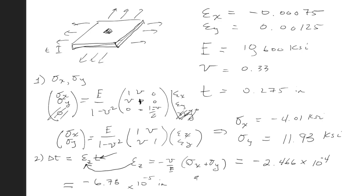For the last step, if we want the dilatation e, you just add up epsilon x, epsilon y, and epsilon z. You get minus 3.7 times 10 to the minus 4.